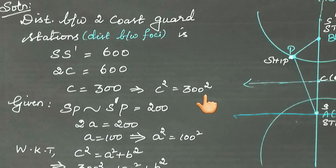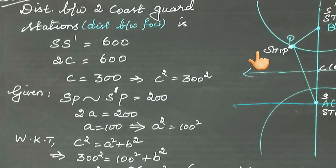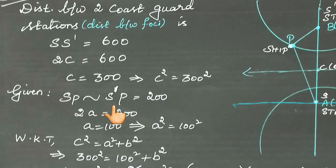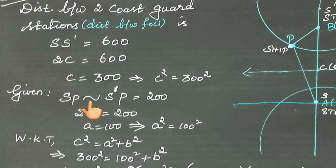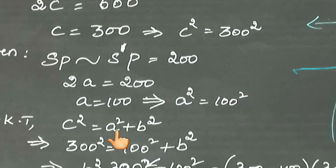The difference in distances from point P to the two stations is 200 km. Using the hyperbola definition: |PA - PB| = 2a = 200. Therefore a = 100, and a² = 100² = 10,000.